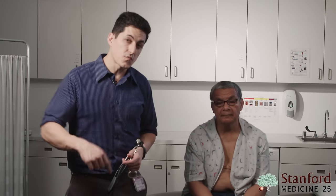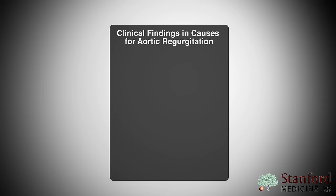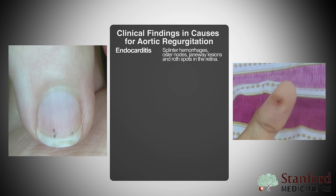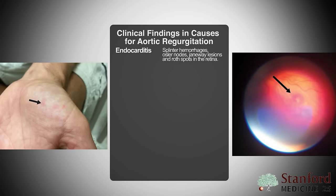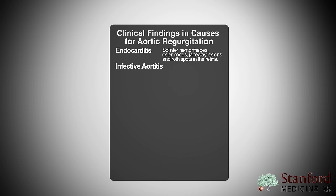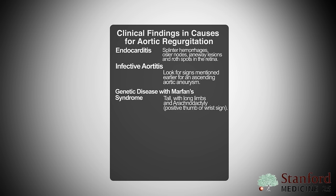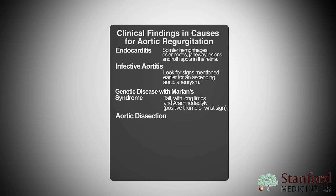Consider the cause of aortic regurgitation. Endocarditis — look for splinter hemorrhages, Osler nodes, Janeway lesions, and Roth spots on retinal exam. Syphilis can cause infective aortitis — look for signs of ascending aortic aneurysm. Genetic diseases such as Marfan syndrome — patients are tall with long limbs, arachnodactyly, and a positive thumb or wrist sign. Aortic dissection — patients present with chest pain radiating to the back; look for pulse deficits and check blood pressure in both arms for discrepancy.